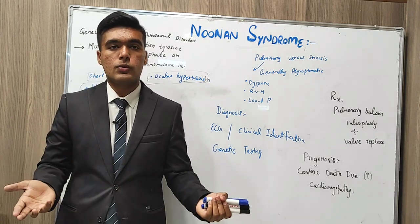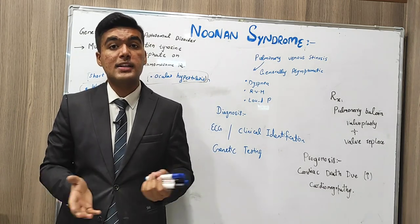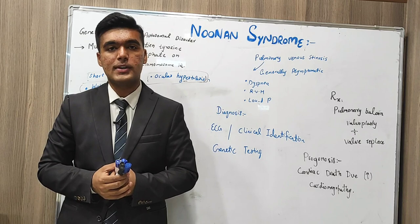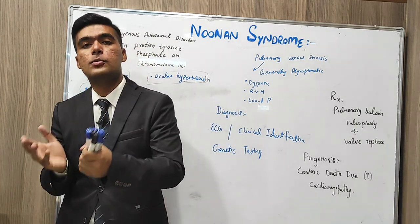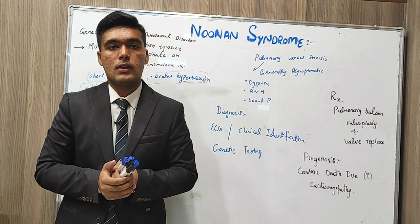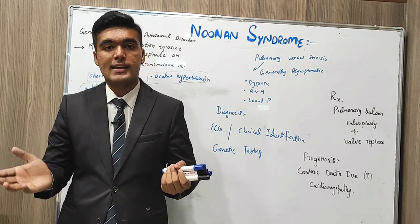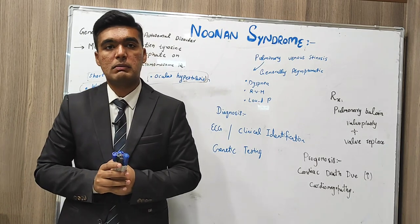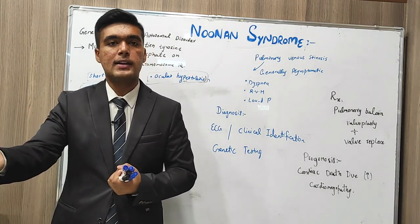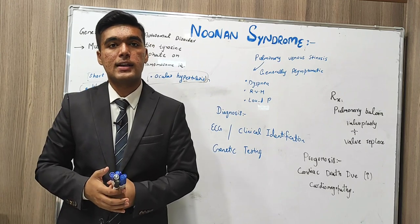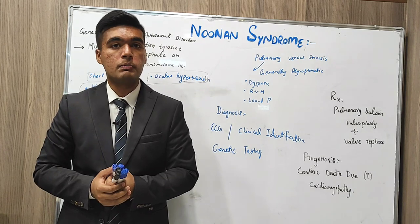Noonan syndrome is an autosomal heterogeneous disorder characterized by a mutation of tyrosine phosphatase non-receptor type 11 on chromosome 12. Tyrosine phosphatase plays its role in signal transduction, in signaling pathways, in receiving and sending information, as well as in neuronal plasticity.